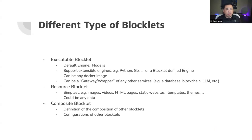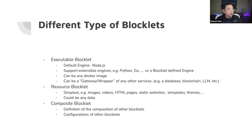When we talk about building different types of blocklets, there are multiple types. The very basic and traditional one is what we call executable blocklets — that's basically an application. Executable blocklets are software that can run on blocklet servers and perform certain tasks. By default we support Node.js as the runtime engine, so you can use Node.js to build blocklets that run on blocklet servers.